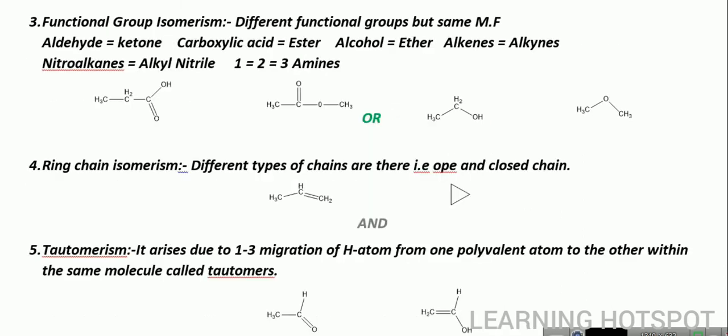Functional isomerism — it's quite easy. We have different functional groups. Aldehyde and ketone are functional isomers of each other. But if you compare aldehyde and carboxylic acid, that does not count as functional group isomerism, so remember this important point. The pairs to remember are: aldehyde and ketone, carboxylic acid and ester, alcohol and ether, alkene and alkyne, nitrile and alkyl nitrile, and primary, secondary, and tertiary amines. For example, a carboxylic group and an ester group have the same molecular formula — same number of carbon and hydrogen atoms — but different properties. Similarly, an alcoholic group and an ether are also examples of functional group isomerism.